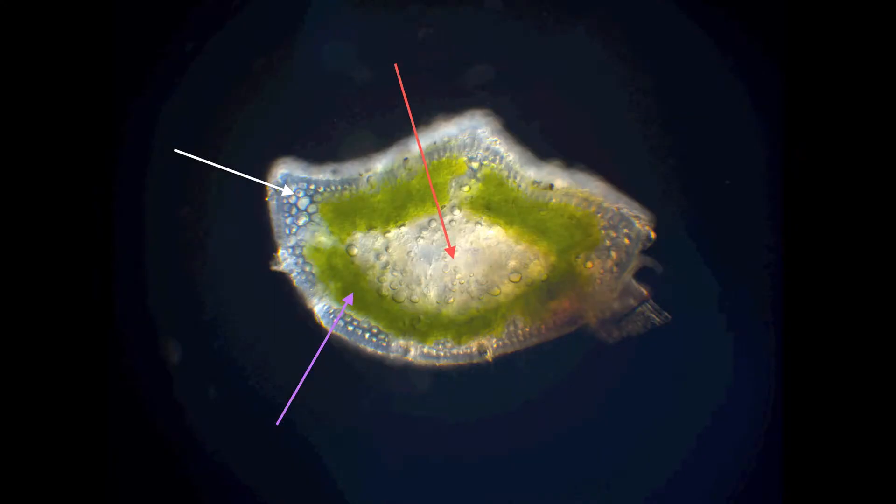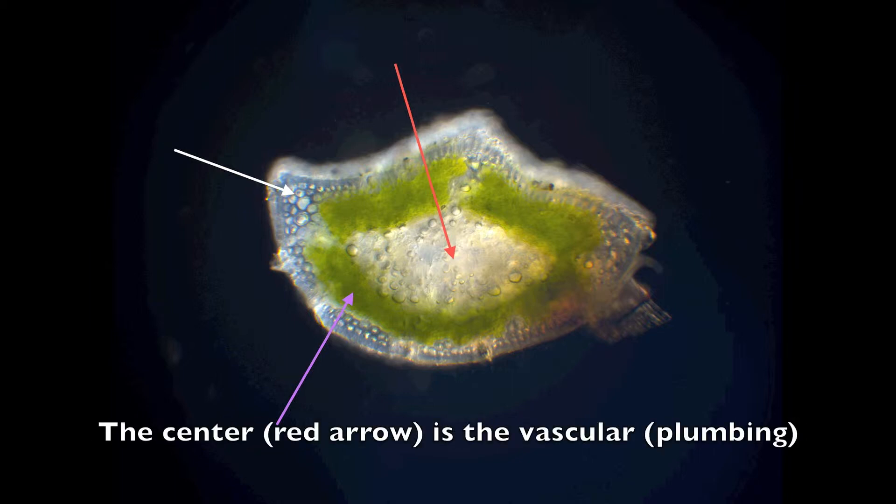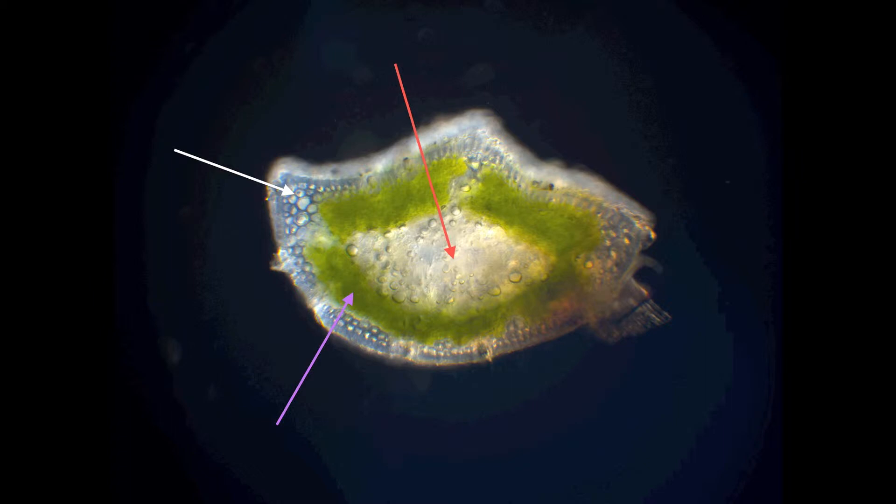Here's a cross section in dark field with several arrows that point out structure. The purple arrow points to the mesophyll where the chloroplasts and all the chlorophyll is. That's where photosynthesis takes place. The red arrow is pointing to the vascular bundle in the center where everything is transported in and out of the leaf. Now notice all the bubbles in the center, those will go away when we do fluorescence. And the white arrow points to structural tissue.